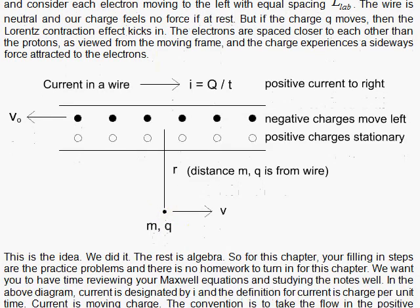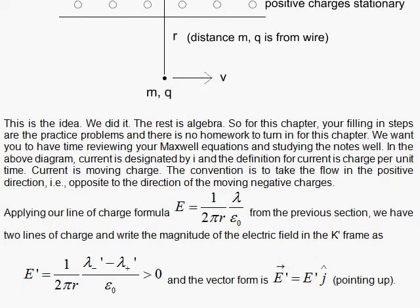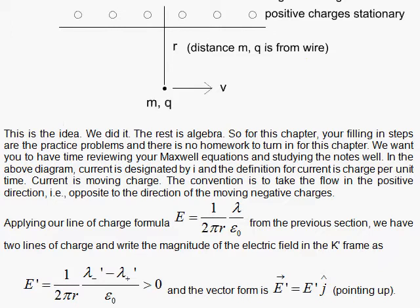To set this problem up, use your infinite line of charge formula. You have your charges, positive and negative, so you will use this formula that we had earlier. We'll put the minus sign in by hand. We know the electron density will win over the positive density, and the force will be upward, attracted to the wire.